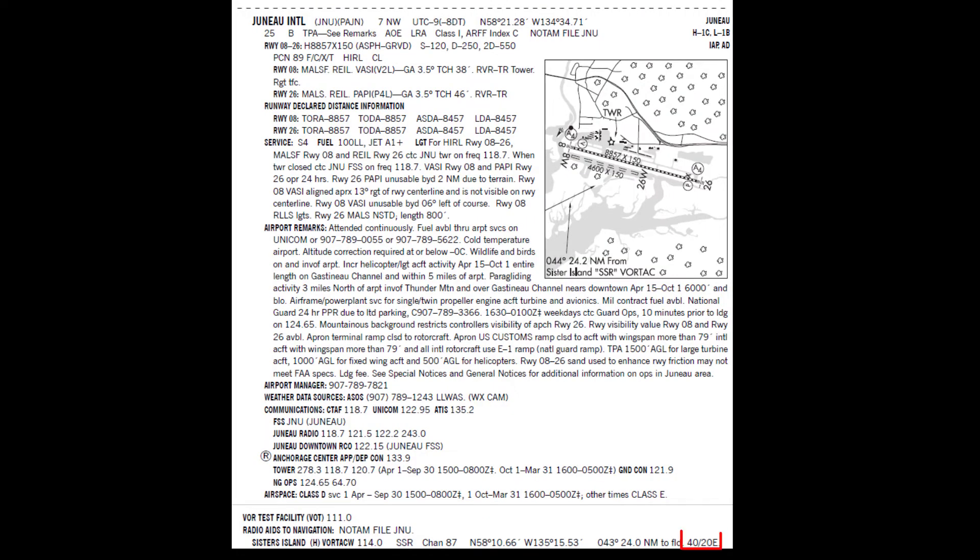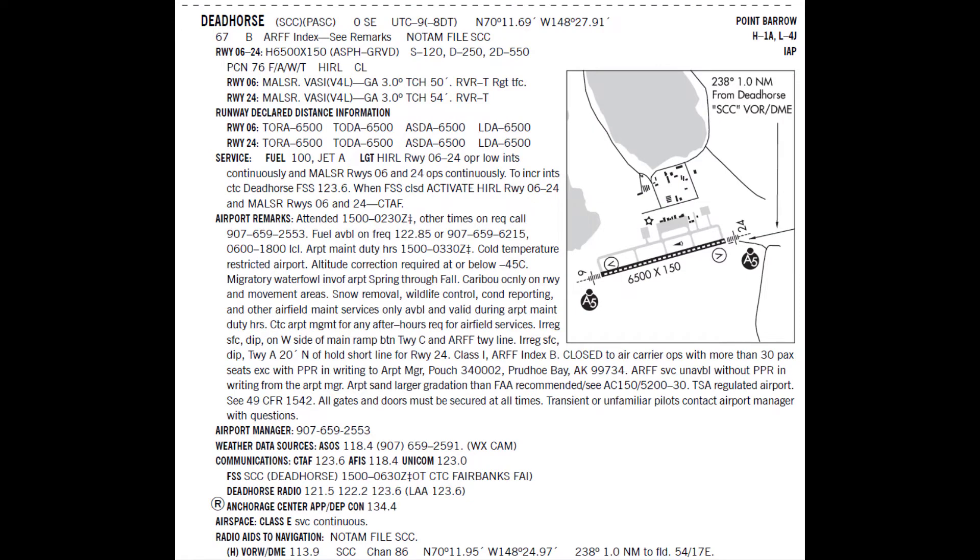Sisters Island VOR, SSR, near Juneau, has a magnetic declination of 17 east updated in 2020. Note that these are all EPIC years, 2010, 2015, and 2020, and the rate of change is about three times greater than the continental US.